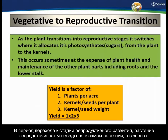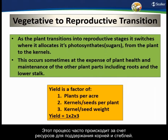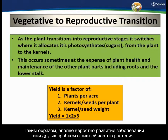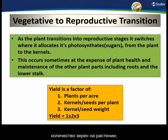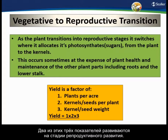As a plant transitions into reproductive stages it really switches where it allocates its photosynthates or sugars — from the growing part of the plant to the kernels. This occurs, oftentimes, at the expense of plant health and maintenance of other parts of the plant, including roots and the lower stalk. Yield is a factor of plants per acre — set with Start and Grow — but kernel count and kernel weight are really driven here in the reproductive stages.